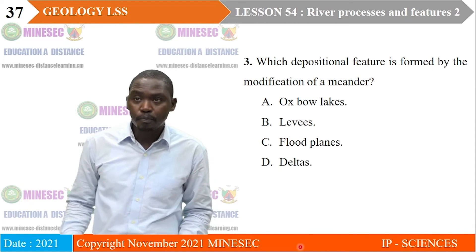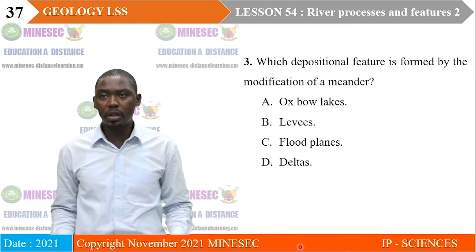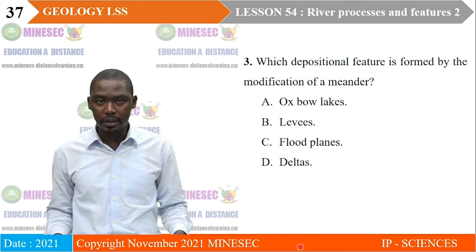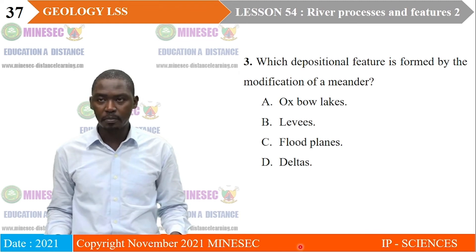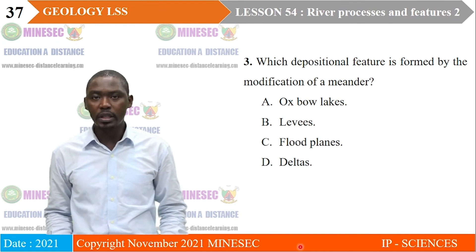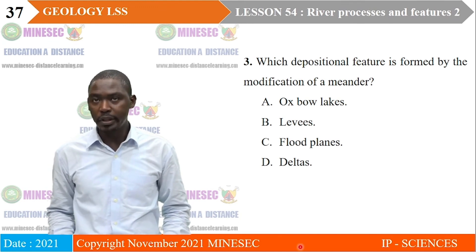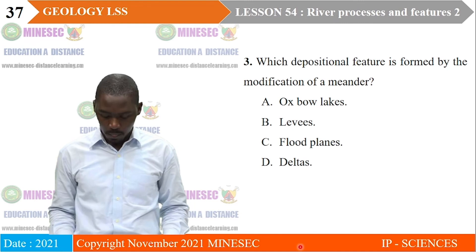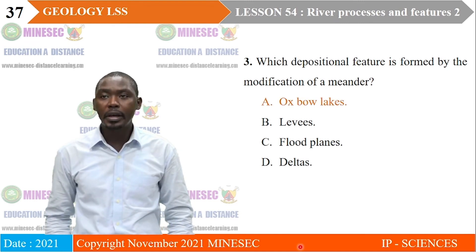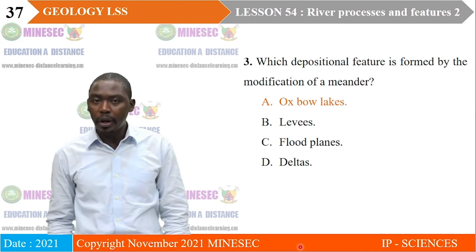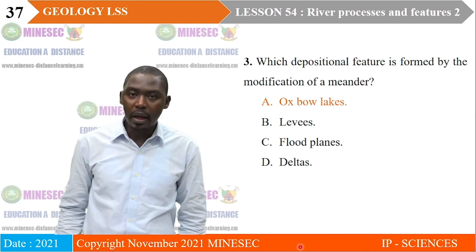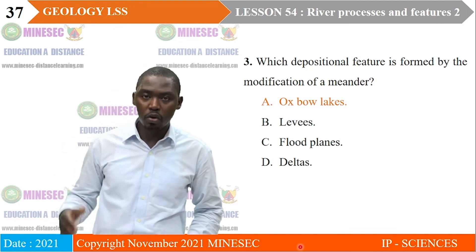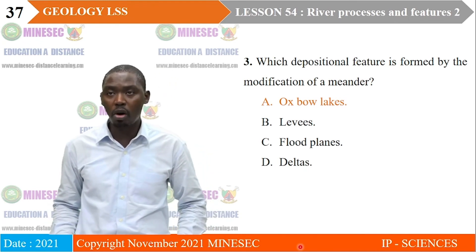Exercise three: Which depositional feature is formed by the modification of a meander? A. Oxbow lakes, B. Levees, C. Floodplains, D. Deltas. Our correct answer is A. Recall that oxbow lakes develop when a meander is cut off and the mouth of the meander is sealed with sediments to isolate the body of water — called an oxbow lake.